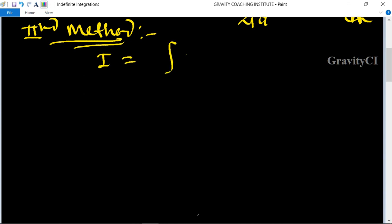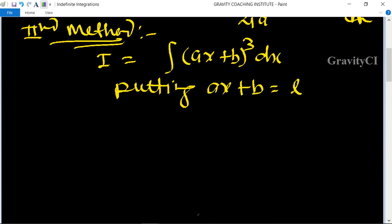Here I = integration (ax + b)³ dx. So first we're putting ax + b = t. Differentiate with respect to t, so we get a dx =